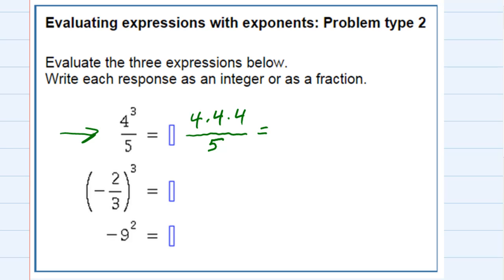So simplifying the top, 4 times 4 times 4 gives us 4 times 4 is 16, times 4 is 64 in the top. And then in the bottom, we just have the 5. So we can leave our answer as 64 fifths, since it doesn't reduce.